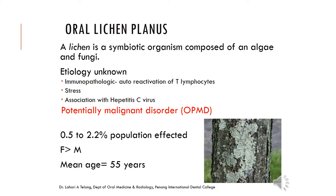Next is oral lichen planus. The term 'lichen' originates from a symbiotic organism composed of algae and fungi. The etiology of oral lichen planus is largely unknown; it is believed to be an immunopathologic lesion with auto-reactivation of T lymphocytes. Stress plays a very important role, and it is also associated with Hepatitis C virus. Most importantly, oral lichen planus is a potentially malignant disorder and needs to be managed carefully, with the patient on long-term follow-up.